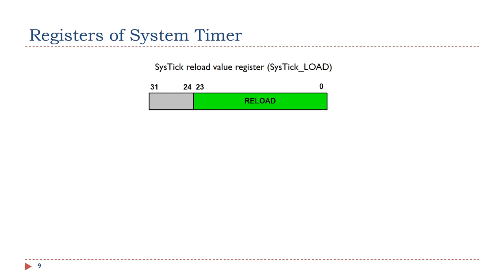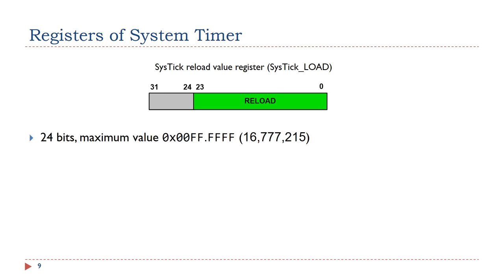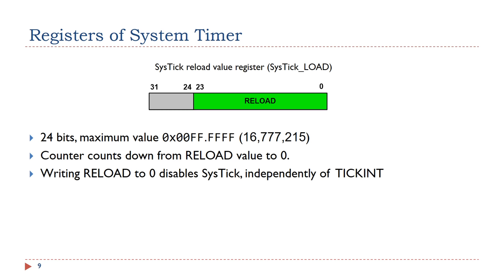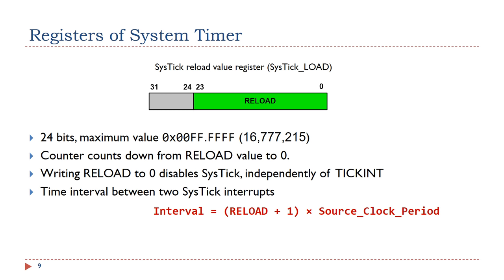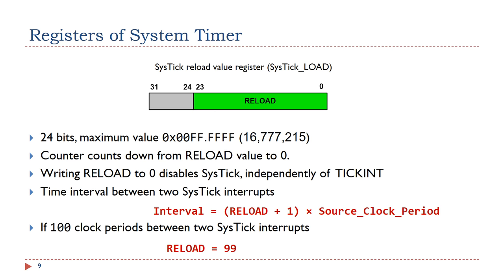Even though the reload value register has 32 bits, the top 8 bits are not used. It can hold a 24-bit value with a maximum value of 0xFFFFFF in hex, or 16,777,215 in decimal. The counter counts down from the reload value to 0. Writing 0 to the reload value register disables the counter on the next wrap, independently of the timer enable bit. The interval of two consecutive SysTick interrupts is (reload + 1) times the source clock period. For example, if 100 clock cycles are needed between two consecutive SysTick interrupts, the reload value should be 99.